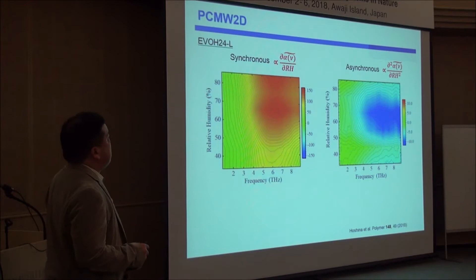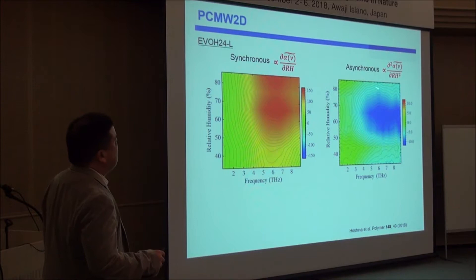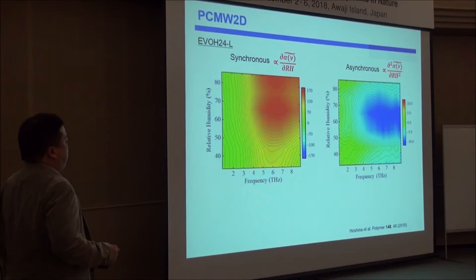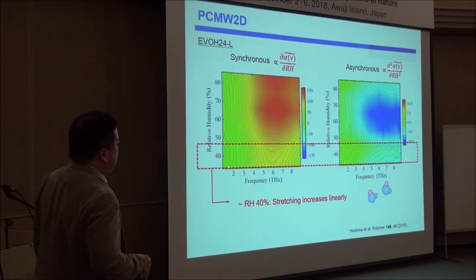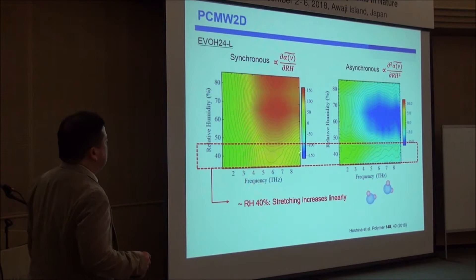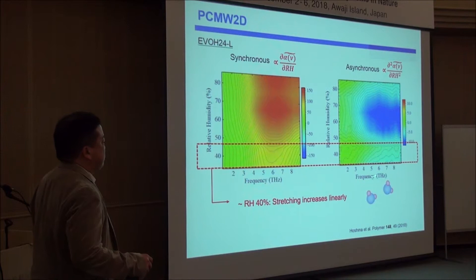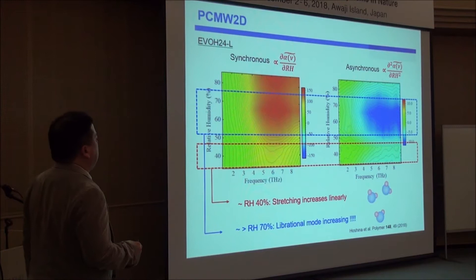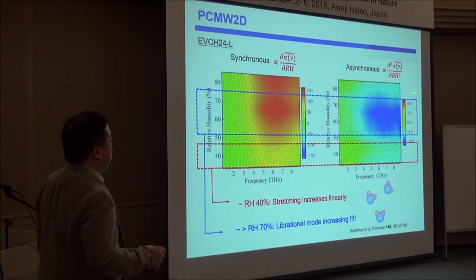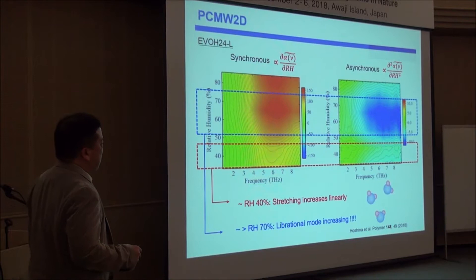This is a PCMW2D plot of one sample — this is synchronous and this is asynchronous, with frequency on one axis and humidity on the other. We realized that at the low humidity region, only a low-frequency area is changing, with no higher-frequency component. That means around this humidity, only the stretching motion is increasing. On the other hand, around 70% humidity, higher-frequency components increase in the spectra, meaning librational motion appears.